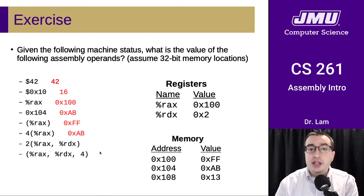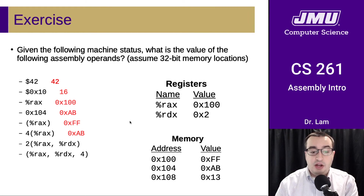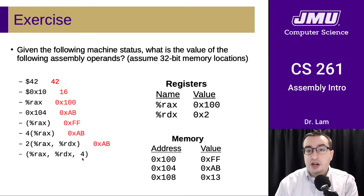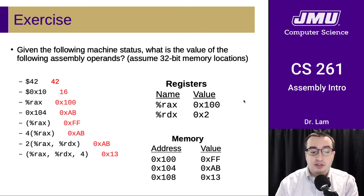These last two use indexed addressing modes. In the first, with no scale, we just add RAX and RDX, getting hex 102, then add the fixed offset to reach hex 104, which again gives us hex AB. In the second, with no fixed offset but a scale factor, we take the second register value of two, multiply by the scale factor of four to get eight, then add that to RAX, giving us effective address hex 108, where the value is hex 13.